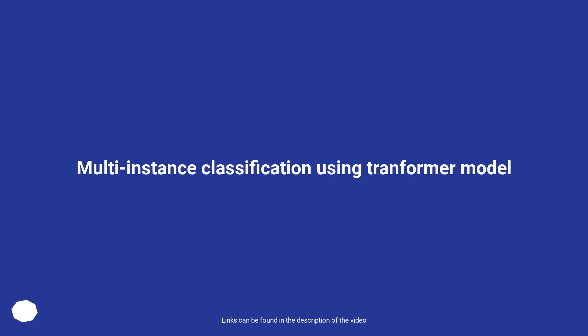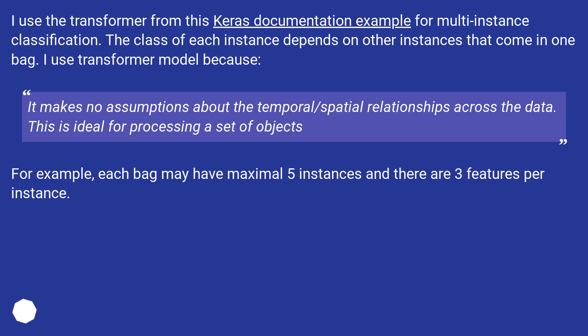Multi-instance classification using a Transformer model. I use the transformer from this Keras documentation example for multi-instance classification. The class of each instance depends on other instances that come in one bag. I use the Transformer model because it makes no assumptions about the temporal or spatial relationships across the data. This is ideal for processing a set of objects.